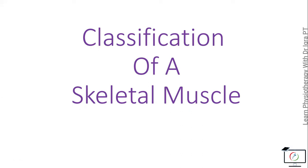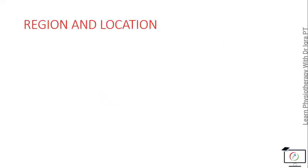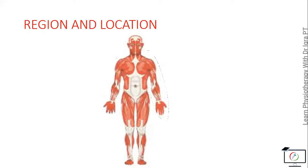Let's start with the classification of a skeletal muscle. If we study the skeletal muscle on the basis of region and location, it has upper limb muscles, trunk muscles, and lower limb muscles.